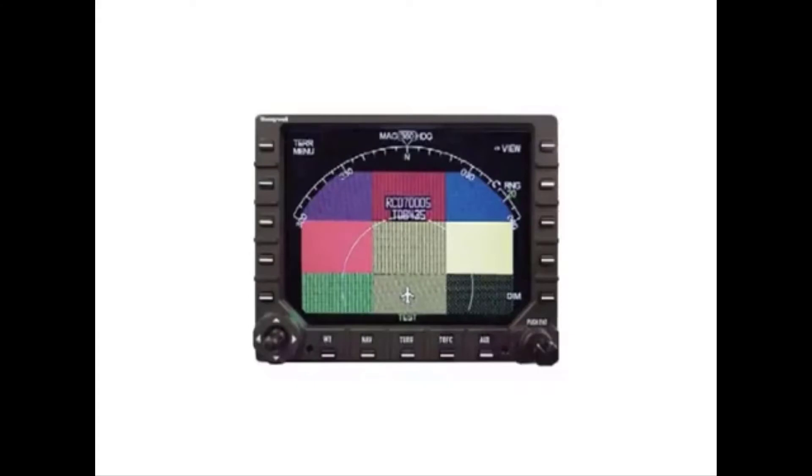The Level 1 self-test checks for configuration errors and gives you an overview of the current operational capability of the eGPWS. The pilot usually runs this test before flight. During the Level 1 self-test, cockpit enunciations are activated to verify wiring and lamps. A terrain display self-test pattern may appear.